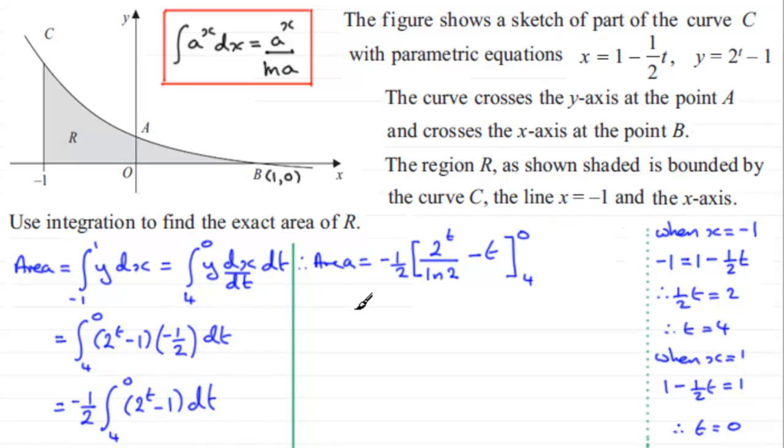So all we've got to do now is just put our limits through. So we've got minus a half, and in the first instance, when we put zero through, two to the power zero—anything to power zero is going to be one—so you've got one divided by the natural log of two, and then you've got minus zero, so I'll leave that out. Then we subtract what we get when we put four through for t. So you're going to have two to the power four, which is sixteen, divided by the natural log of two, and then you've got minus four, and we'll close the square bracket off there.